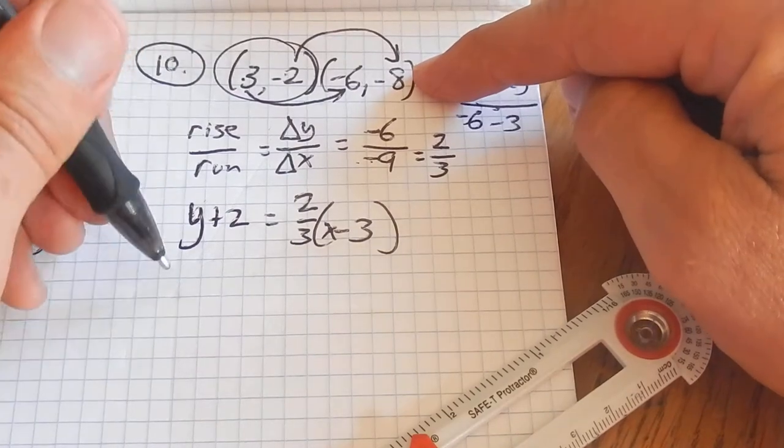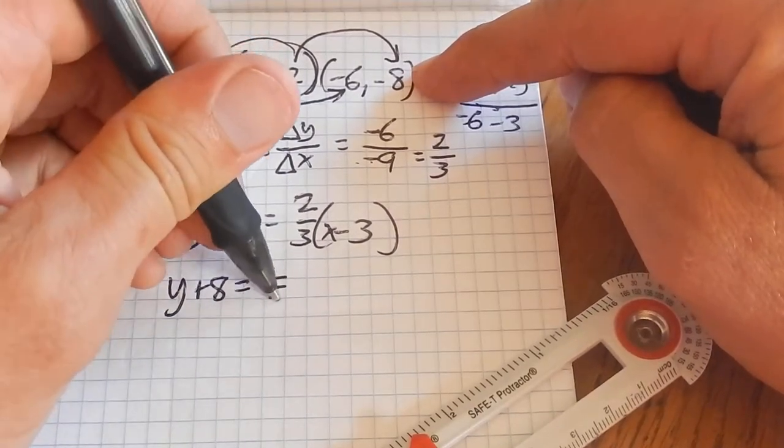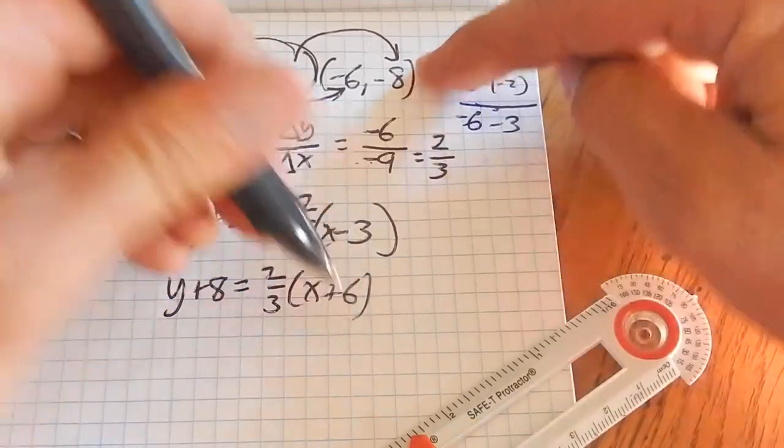If I'd picked this point, I would have written y plus 8 equals 2 thirds x plus 6.